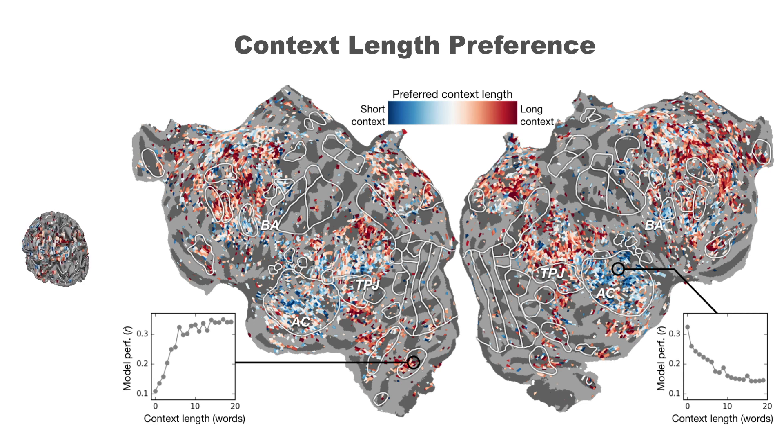The next question we ask is whether different brain areas are selective to different context lengths. We find that low-level areas like the auditory cortex are better predicted by representations with shorter context, and high-level areas prefer longer word sequences. This shows that conditioning on context length allows our model to effectively capture the presence of temporal receptive fields in language.